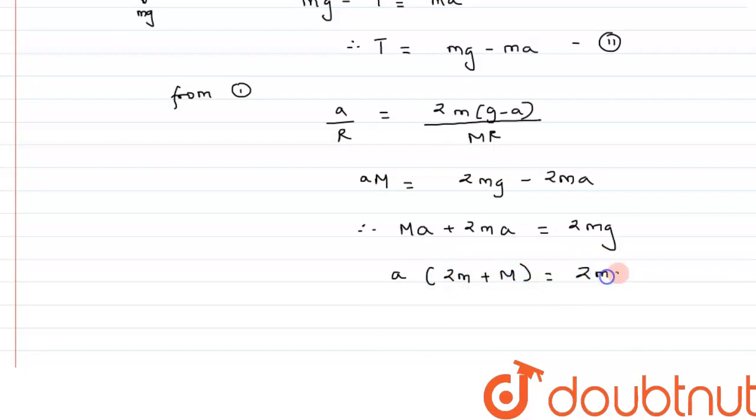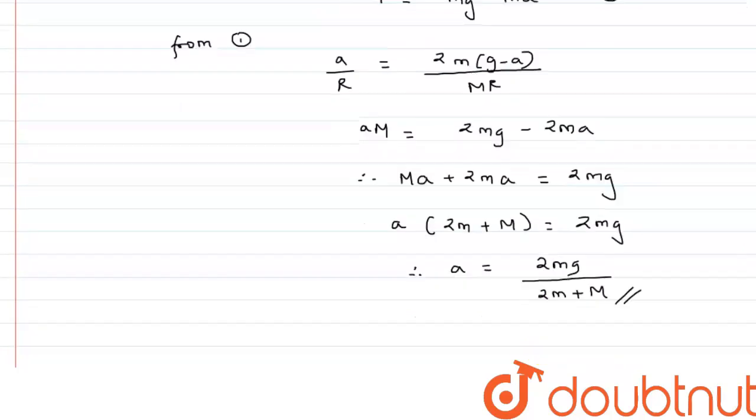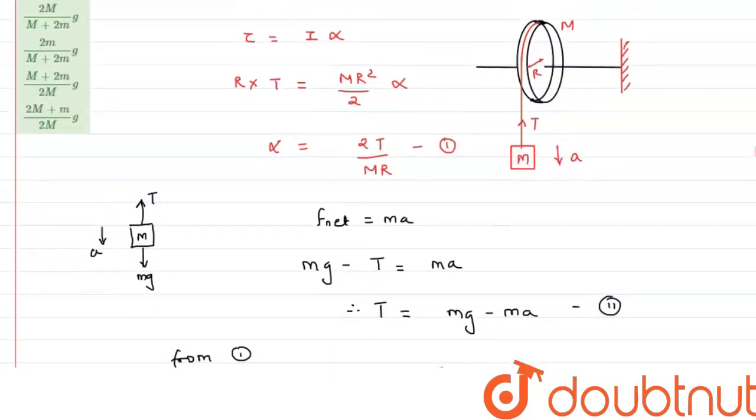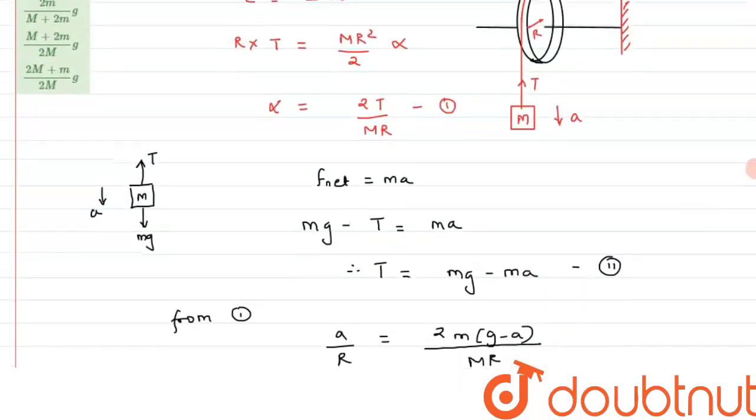Therefore, the acceleration is a = 2mg/(2m + M). This is the value of acceleration of the small block, and this matches with option B.